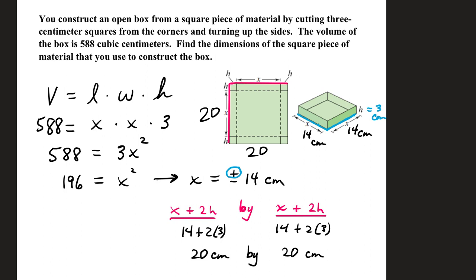The height will be 3 because we snipped out 3 by 3 squares. We just don't know the base yet. Volume is 588 cubic centimeters. The length and width will both have a value of x because of the square base. The height is 3.